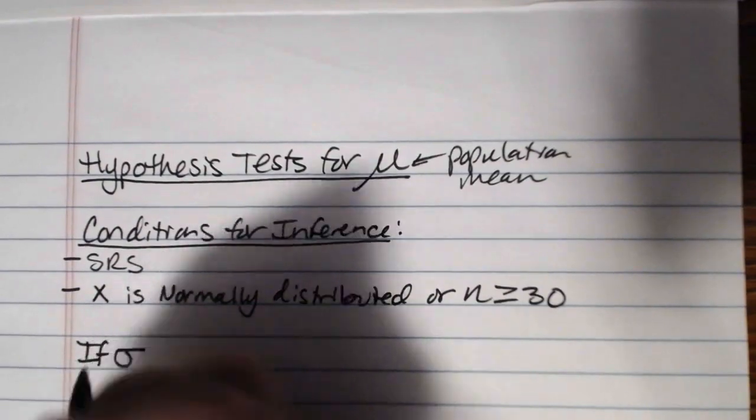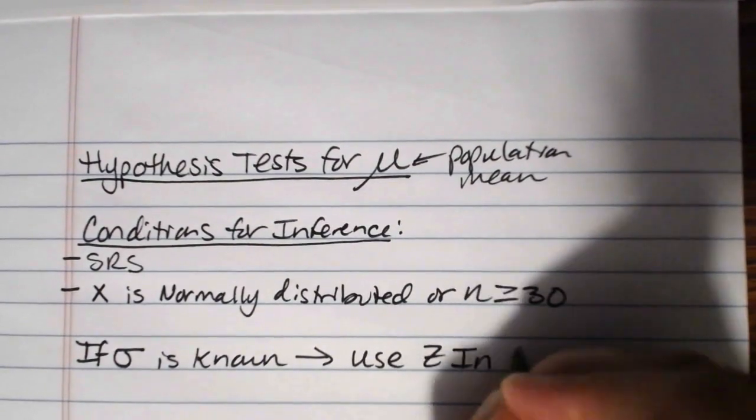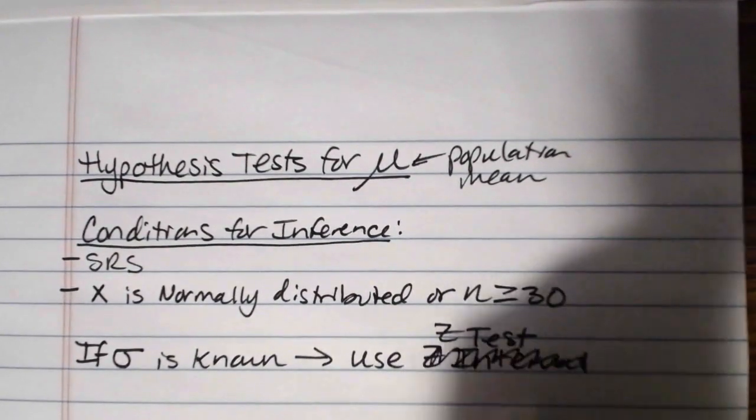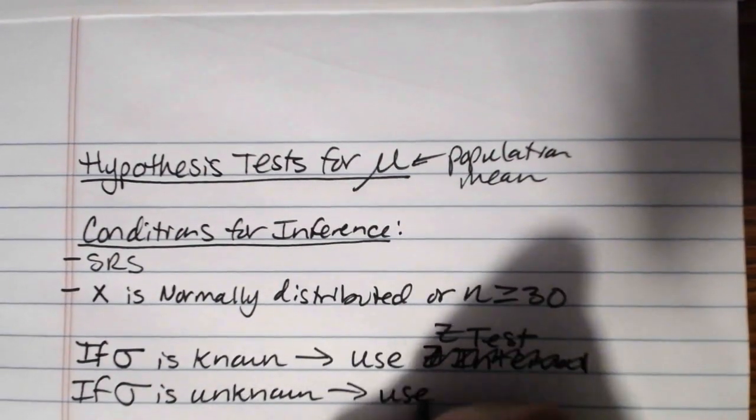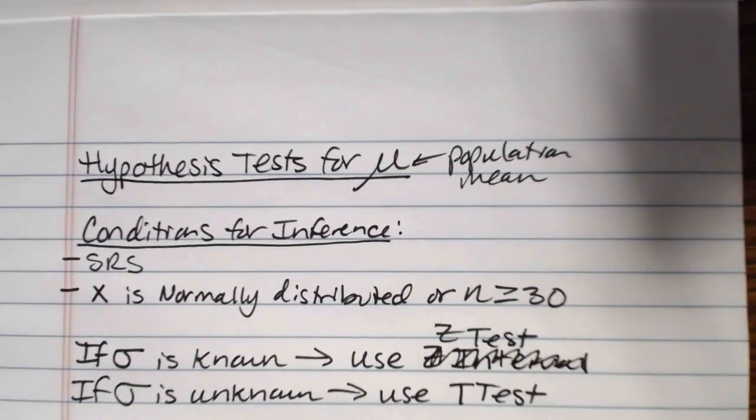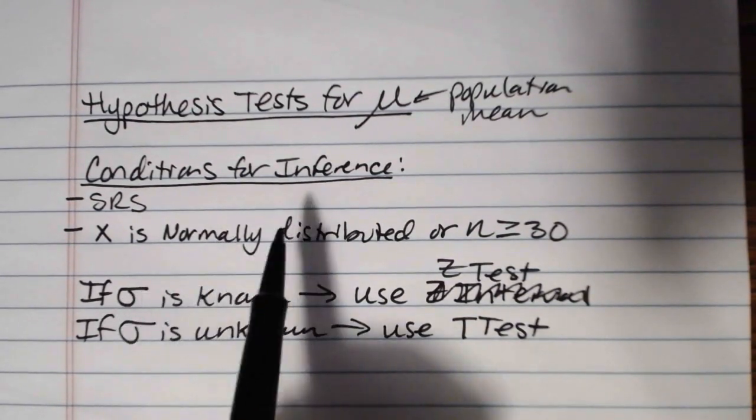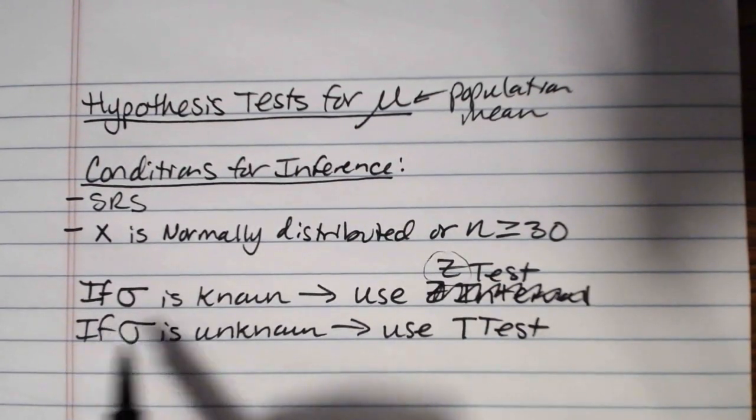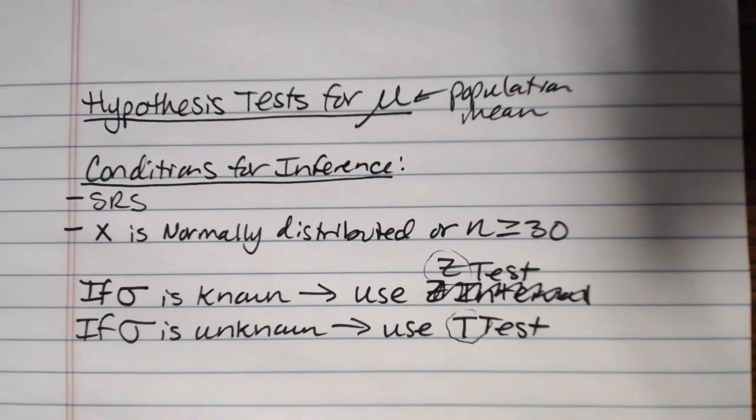We need to have information that X is normally distributed, or we need a sample size of greater than or equal to 30. And then this last part isn't really a condition, it just tells you when to use which test. If sigma is known, that's when we're going to use the Z test hypothesis test. And if sigma is unknown, then we will use the T test. So whether or not we know sigma is what determines which type of test we will use.